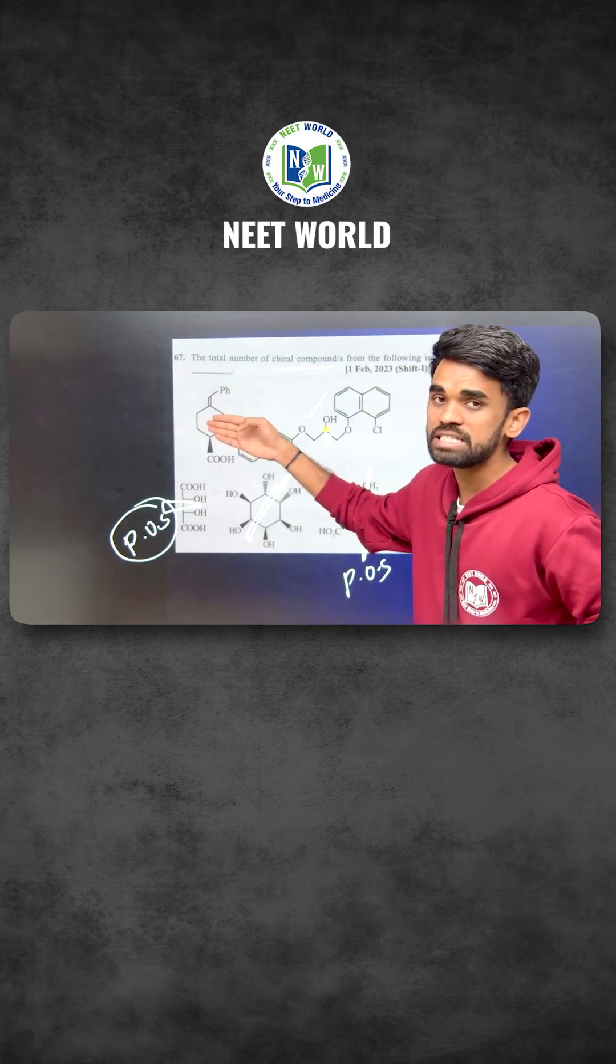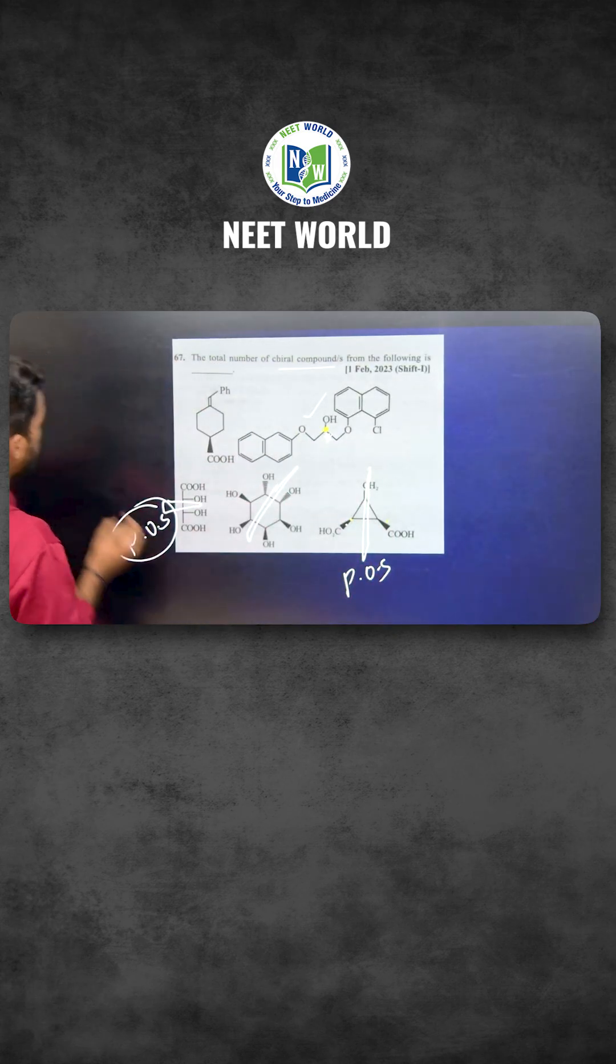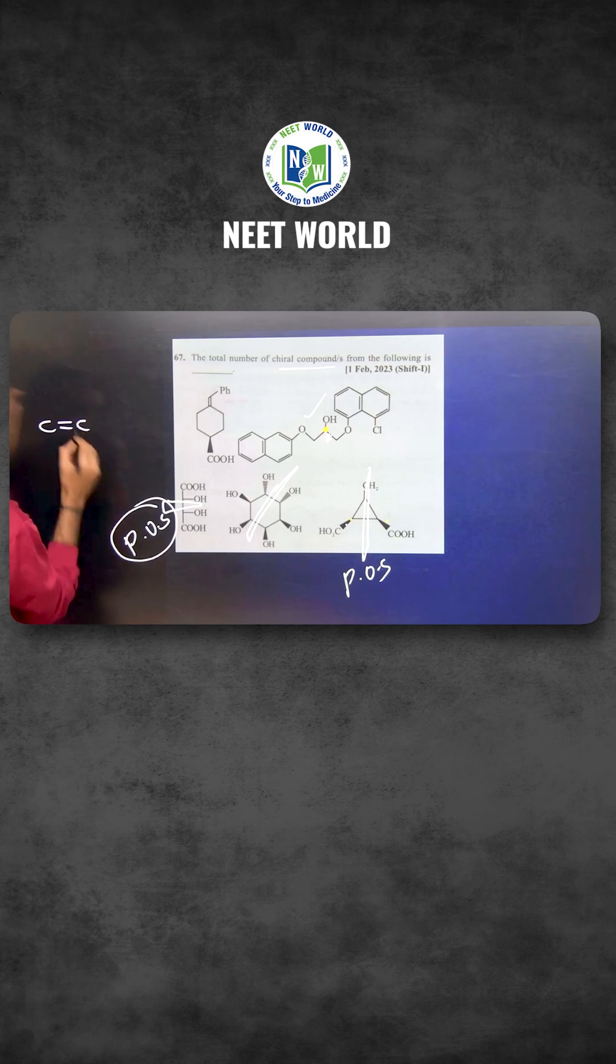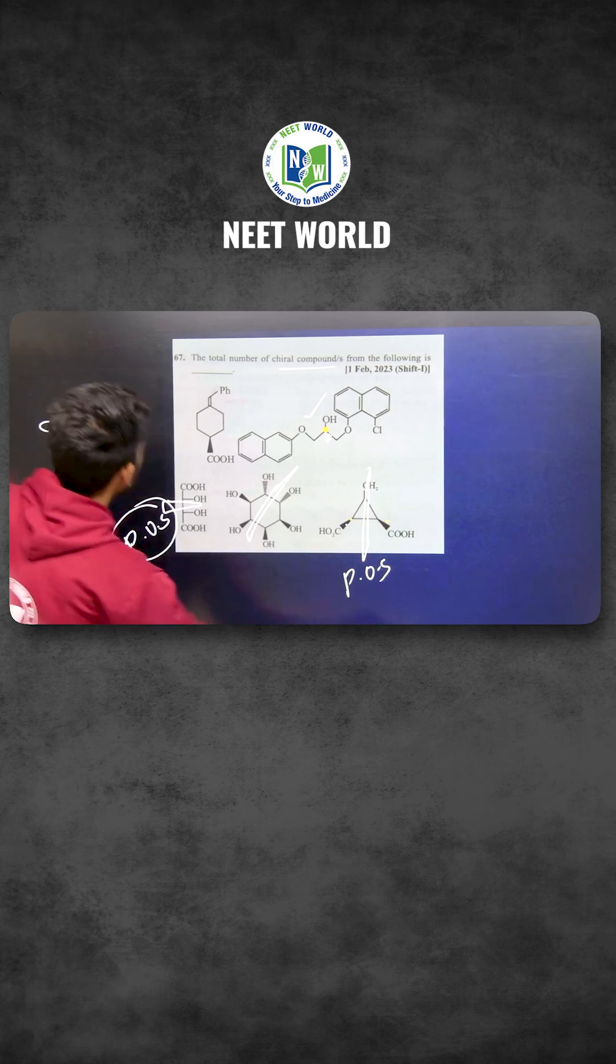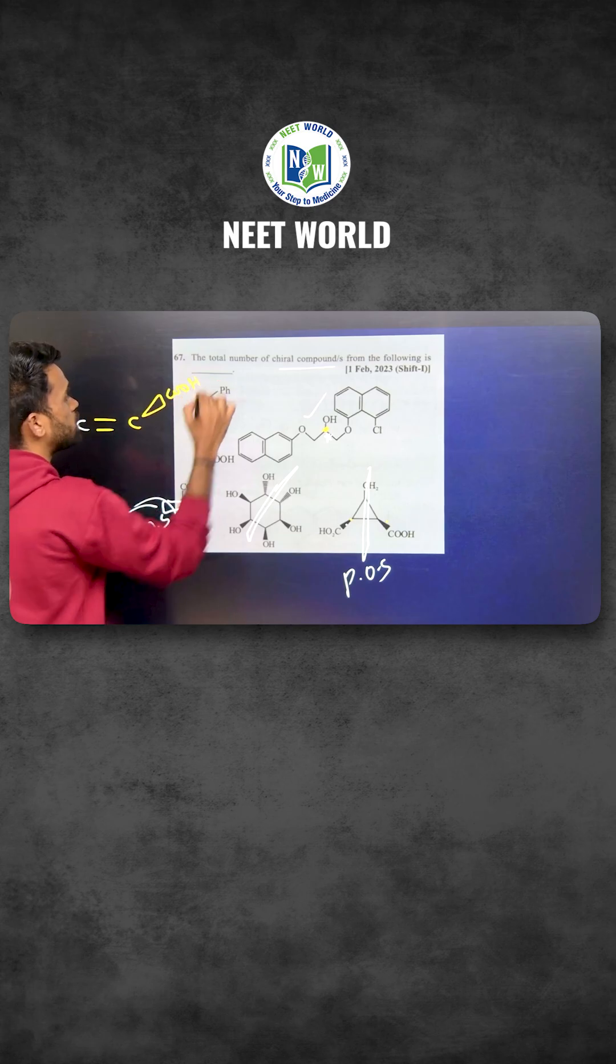And look at this molecule. You can imagine this like, or consider it like allene molecules. Consider these double bonded carbons like this, and this ring is also considered as a double bond, like one degree of unsaturation, like this.